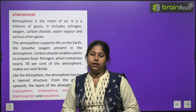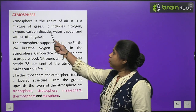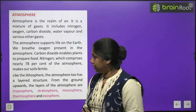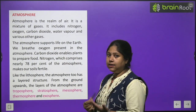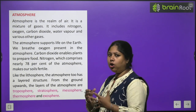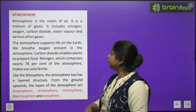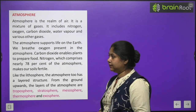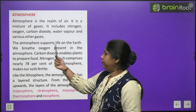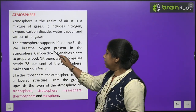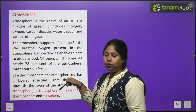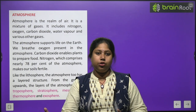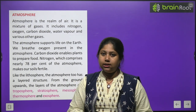Now we will read about the Atmosphere. Atmosphere is a realm of air — it maintains the balance of all the air. It is a mixture of gases. Atmosphere is a mixture of different gases including nitrogen, oxygen, carbon dioxide, water vapor, and various other gases. The atmosphere supports life on Earth. We breathe oxygen present in the atmosphere, and carbon dioxide enables plants to prepare food through photosynthesis.